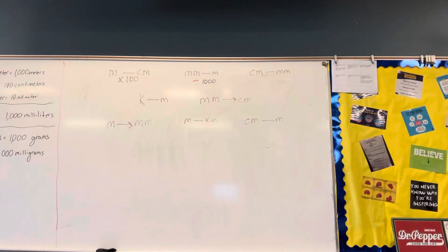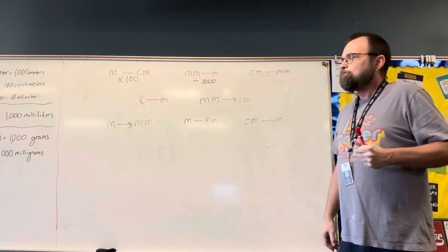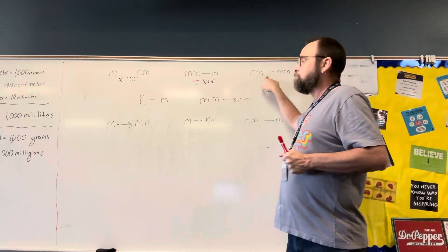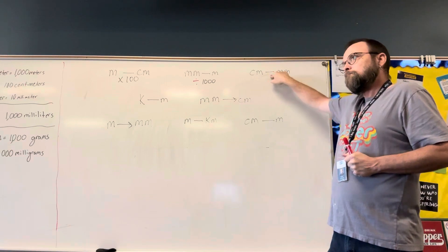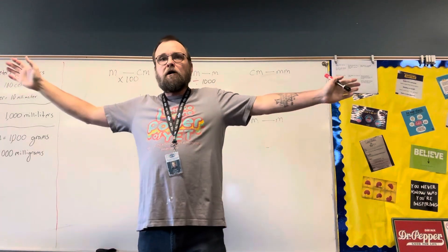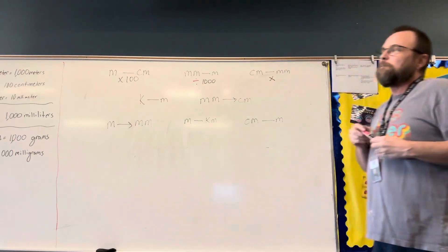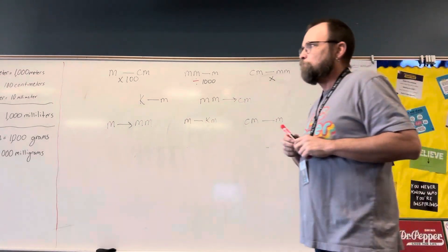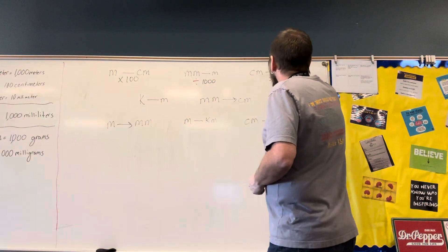Centimeters to millimeters — Anushka, multiplying or dividing? Which is smaller: centimeters or millimeters? Millimeters are smaller, so centimeters to millimeters means we're multiplying. And how many millimeters are in one centimeter? It's right here — how many millimeters in one centimeter? Ten. So this one we're multiplying by ten.